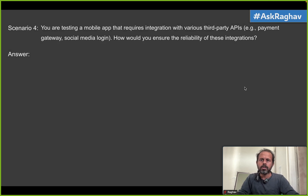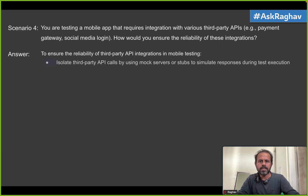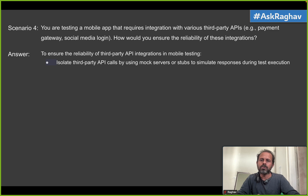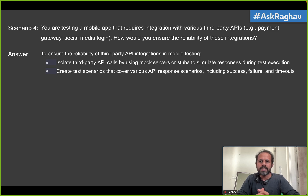Coming to scenario number four: you are testing a mobile app that requires integration with various third-party APIs — for example, payment gateways and social media login. How would you ensure the reliability of these integrations? This is a very common scenario because many apps use integrations with third-party applications and APIs. To check the reliability of third-party APIs, we have to isolate them and use mocking services like mock servers to mimic their calls, or use stubs to simulate the responses.